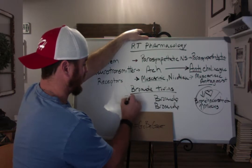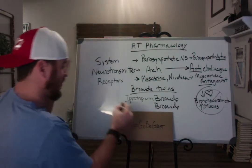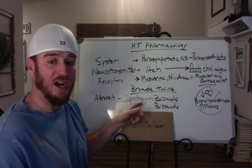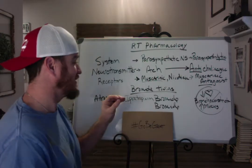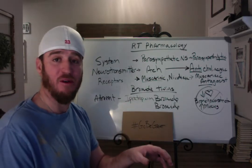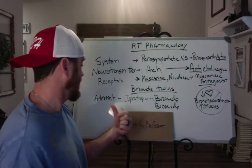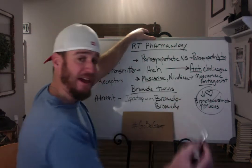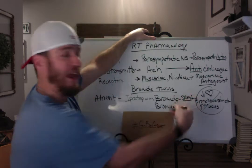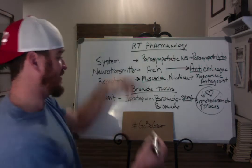The first one is ipratropium bromide. The brand name is Atrovent. This is an aqueous solution or MDI that is nebulized or given via MDI. It's short-acting — every four to six hours — and it's commonly given in conjunction with albuterol, which we call duoneb. If you're classifying by SAMA or LAMA, you would call this a short-acting muscarinic antagonist because you have to give it throughout the day; you can't give it once and have it work all day long.